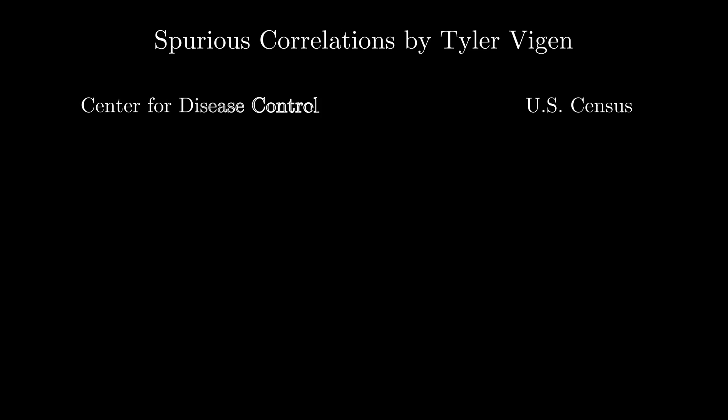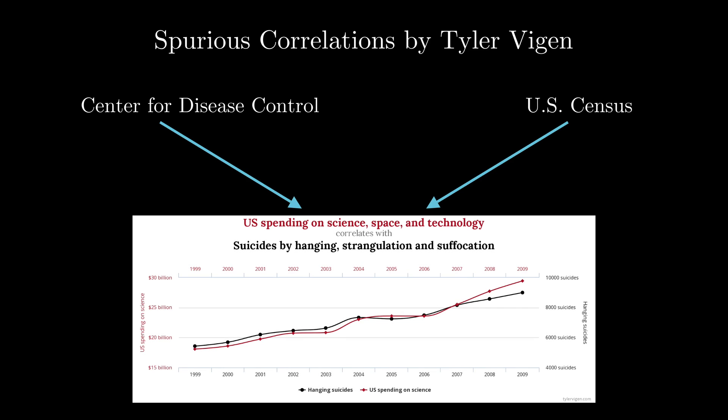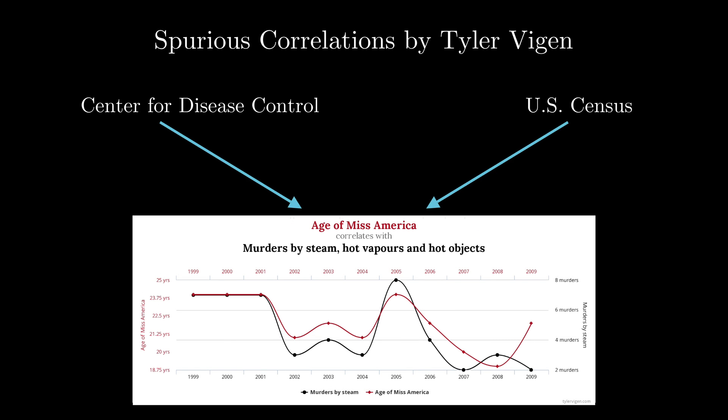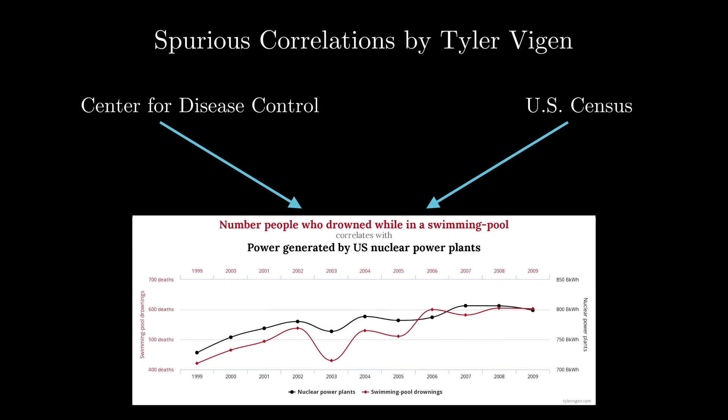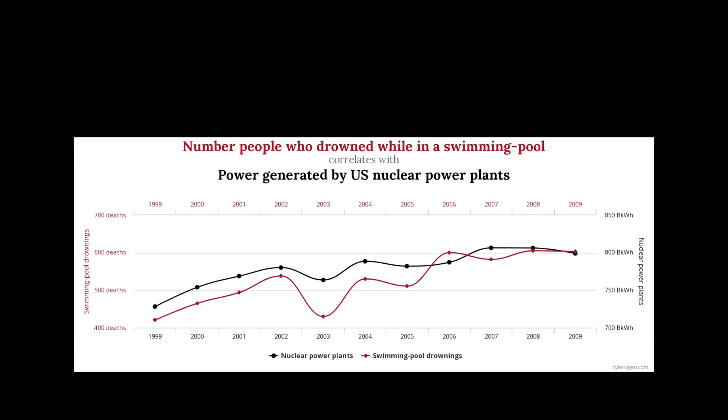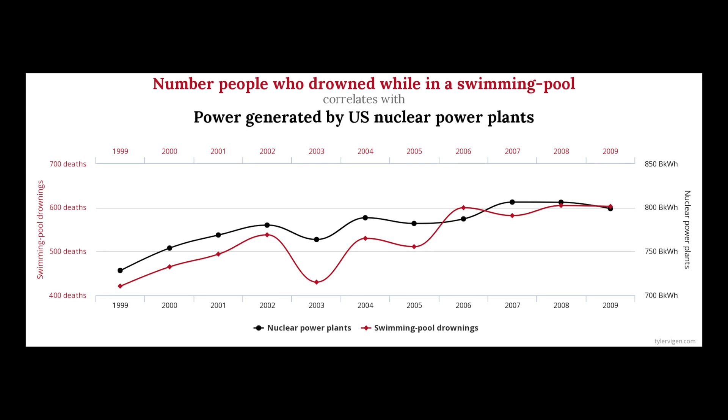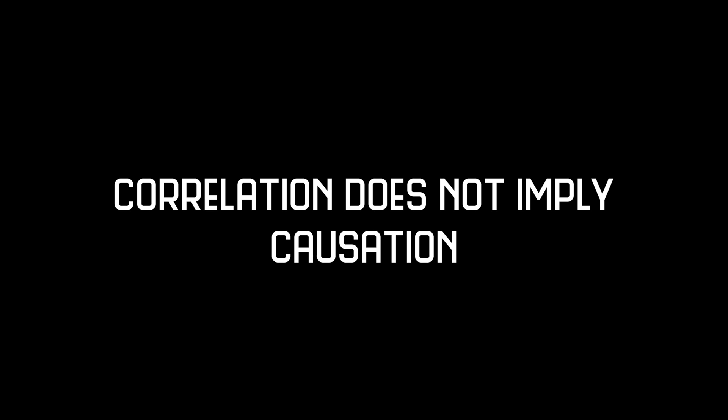One guy named Tyler Vigan took this premise to an extreme. Using open source data, he identified several absurd correlations. Very strong correlations. Common sense tells us that we should not regard these results as meaningful, which is why correlation does not imply causation principle is central to any research.